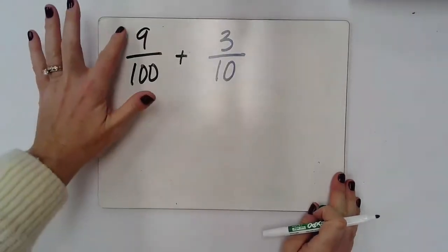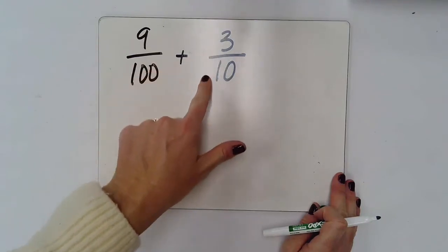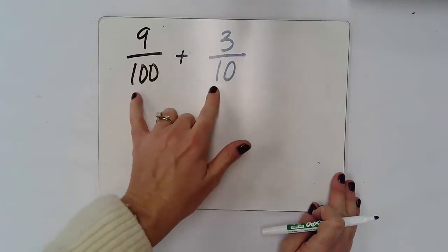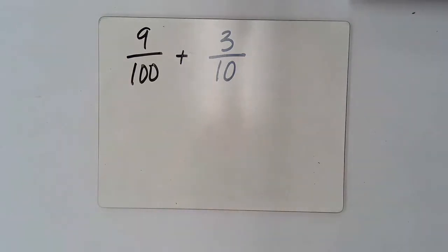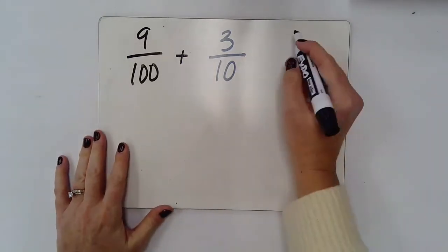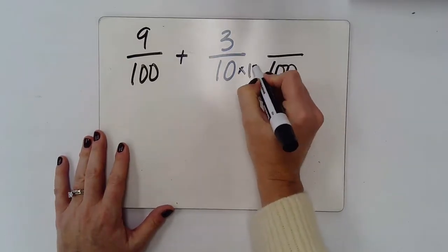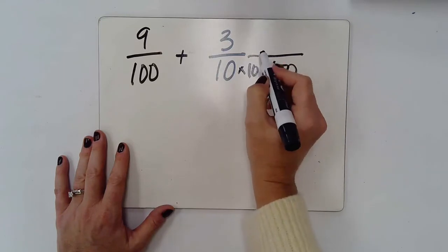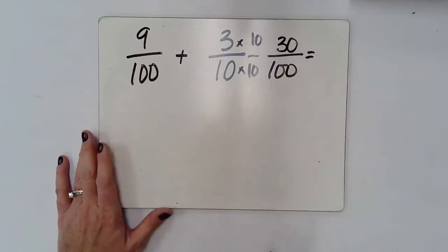This time I have nine hundredths with three tenths. So I can't add these just yet, but I can find the equivalent fraction of three tenths. So I know it's going to have the denominator of one hundred, and I know if I multiply the denominator by ten, I'm going to multiply the numerator by ten, and it's going to give me thirty hundredths.